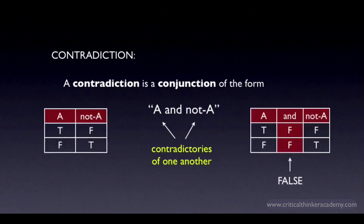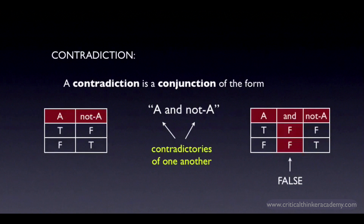Given the logic of the conjunction and the contradictory that we've looked at in this course, we can see that the defining feature of a contradiction is that, for all possible combinations of truth values, the conjunction comes out false, since a conjunction is only true when both of the conjuncts are true. But by definition, if the conjuncts are contradictories, they can never be true at the same time. So propositional logic requires that all contradictions be interpreted as false.